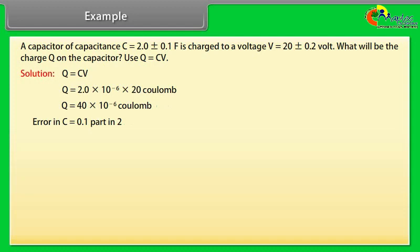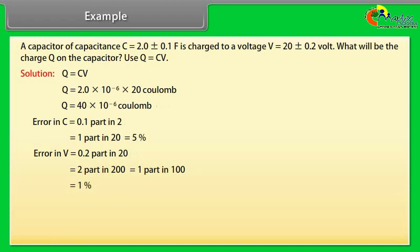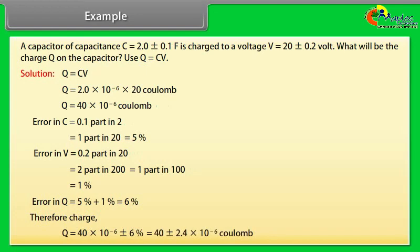Error in C is equal to 0.1 part in 2 is equal to 5 percent. Error in V is equal to 0.2 part in 20 is equal to 1 percent. Error in Q is equal to 5 percent plus 1 percent is equal to 6 percent. Therefore charge Q is equal to 40 plus minus 2.4 into 10 to the power minus 6 coulomb.